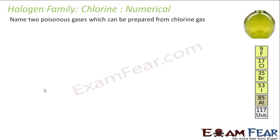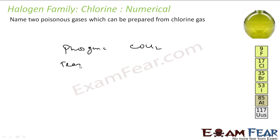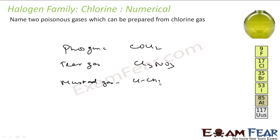Second numerical: give the reason for the bleaching action of chlorine. Chlorine is used as a bleaching agent because when it reacts with water, it gives 2HCl and nascent oxygen [O], and this nascent oxygen is responsible for the bleaching action. Third: name two poisonous gases prepared from chlorine — phosgene (COCl2), tear gas (CCl3NO2), and mustard gas (ClCH2CH2SCH2CH2Cl, with sulphur in the middle).